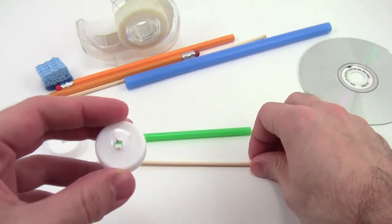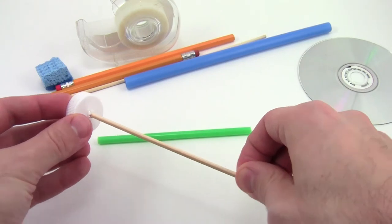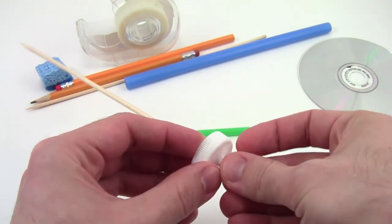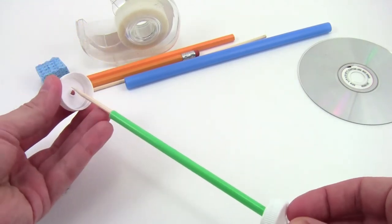Next, poke holes in the middle of the bottle caps using a hobby knife or a drill. Then, thread the bottle cap onto the skewer, thread the straw onto the skewer, and finally put on the other bottle cap.